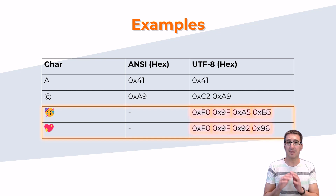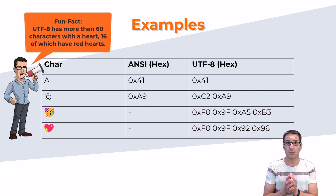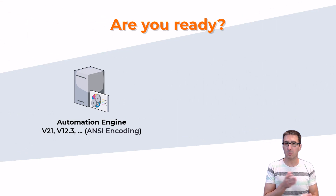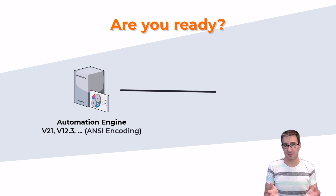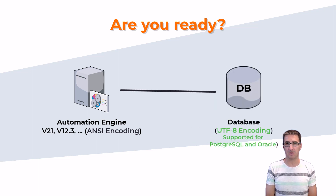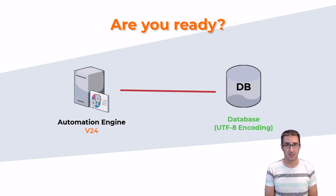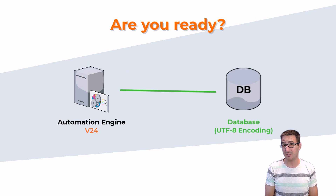By definition, UTF-8 is an encoding method utilizing which more than 1 million different characters can be stored in 1 to 4 bytes per character. So, in order for your version 24 Automic system to effectively accommodate such a diverse range of characters, it is imperative that your database adopts UTF-8 encoding. If your database already utilizes UTF-8 encoding, then you are ready for version 24. If not, then you need to convert your database to UTF-8 — the conversion is mandatory. Version 24 will only work with a UTF-8 database.